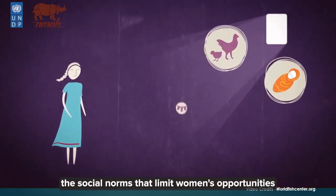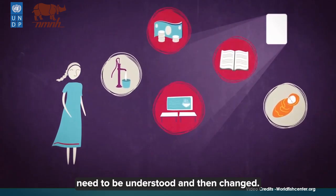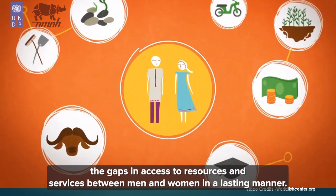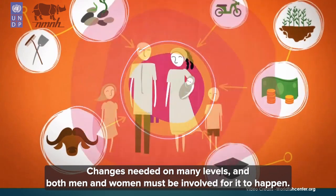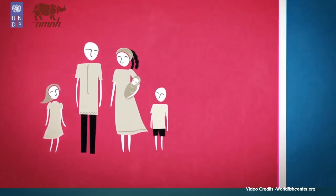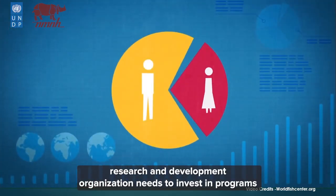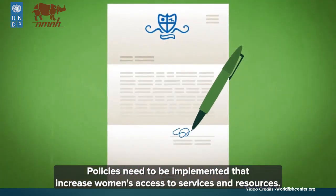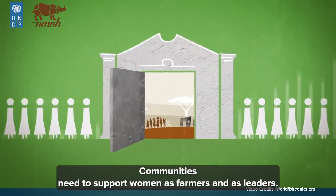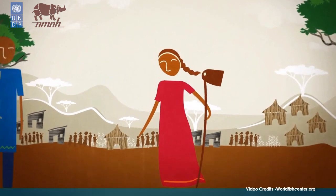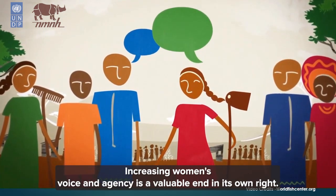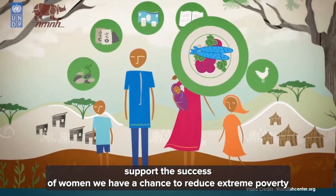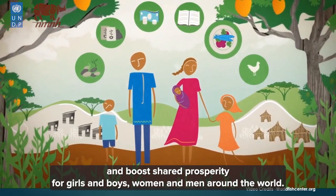The social norms that limit women's opportunities need to be understood and then changed. By taking a gender transformative approach, we can influence social norms and bridge the gaps in access to resources and services between men and women in a lasting manner. Change is needed on many levels, and both men and women must be involved. Research and development organizations need to invest in programs that promote gender equality alongside improving productivity and incomes. Policies need to be implemented that increase women's access to services and resources. Communities need to support women as farmers and as leaders. Increasing women's voice and agency is a valuable end in its own right, and when development organizations, policies, and communities support the success of women, we have a chance to reduce extreme poverty and boost shared prosperity for everyone around the world.